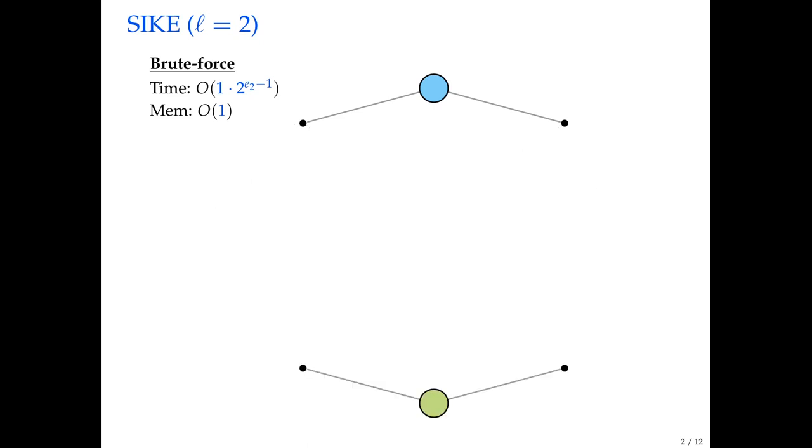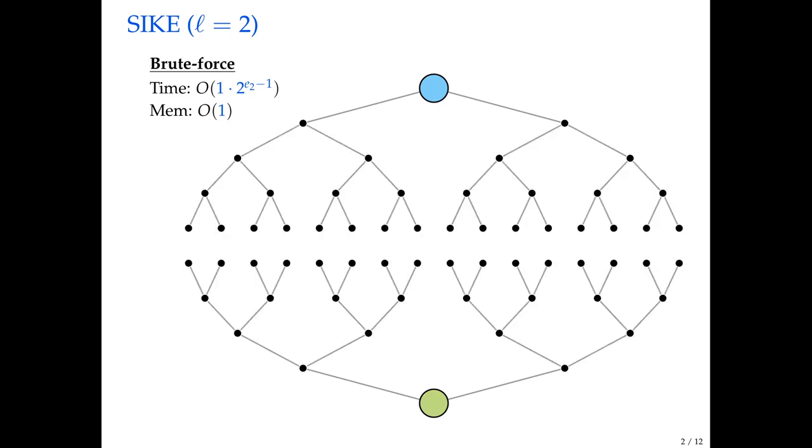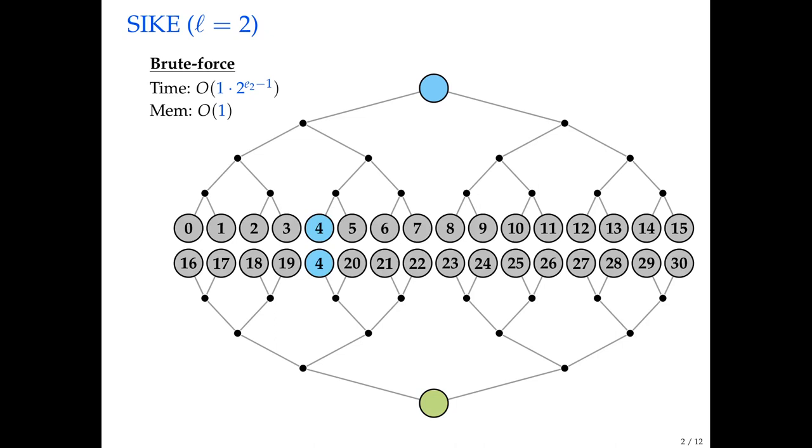This is not the best way to attack this. What we can do if we assume to have some public key that we're attacking, that we're trying to retrieve the secret key from, instead of just starting from this public parameter curve, which is the blue node here, we can also start walking from the public key and try to end up on a shared node in the middle. So we walk halfway from both sides. By the way the SIDH parameters are set up, it's guaranteed that there's only a single node which connects the two halves. In this case, the node labeled four, which I made blue.